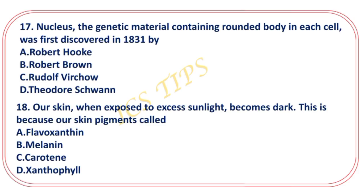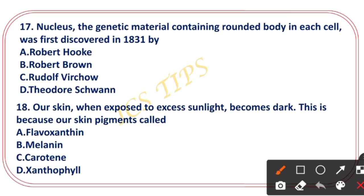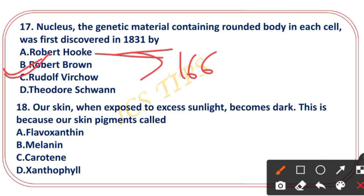The nuclear genetic material content rounded body in each cell — the nucleus — was first discovered by Robert Brown in 1831. Note: Robert Hooke discovered the cell in 1665. The nucleus was discovered by Robert Brown in 1831.